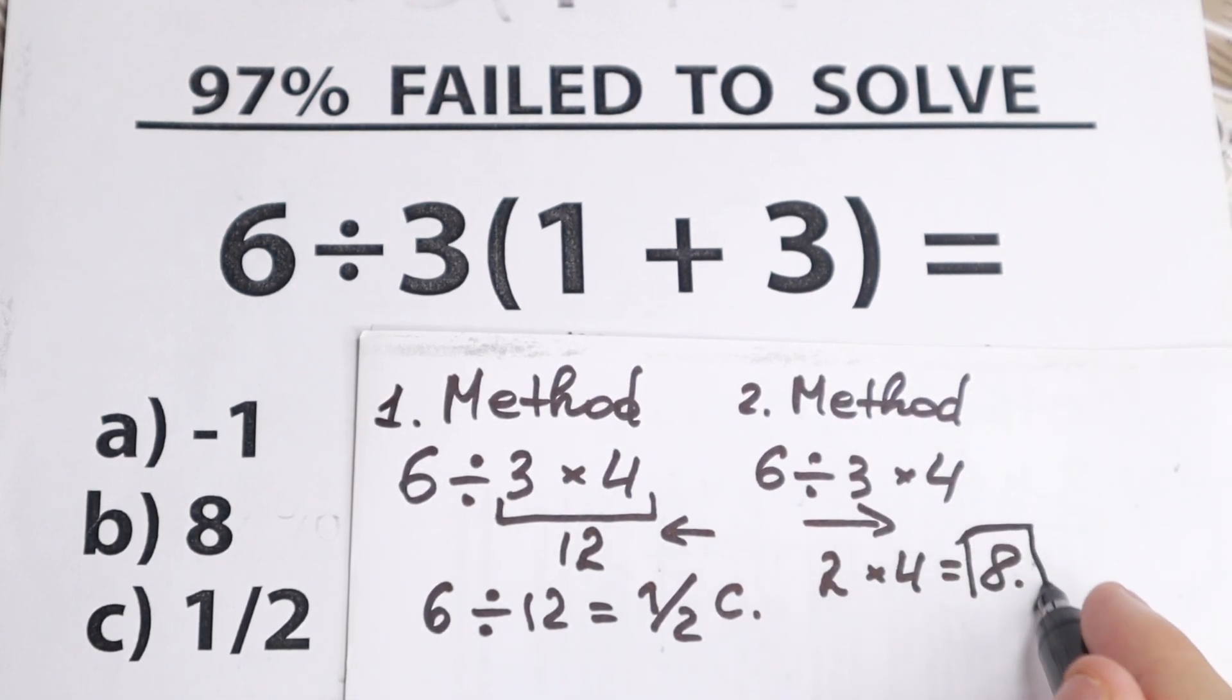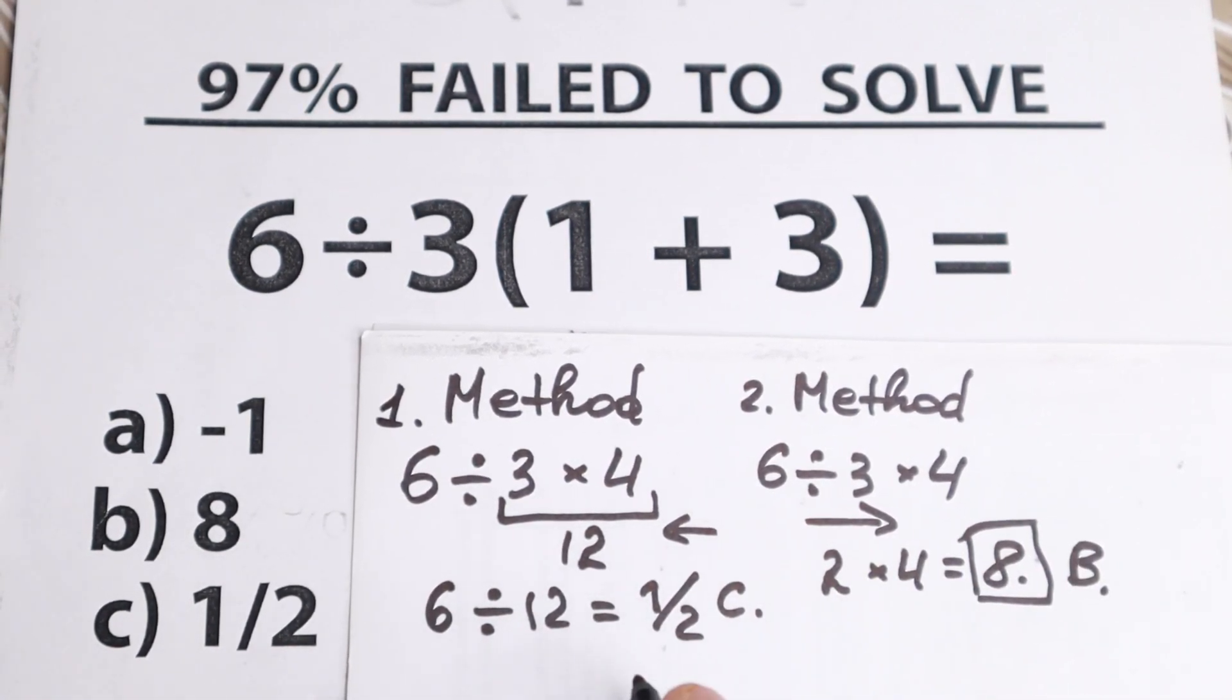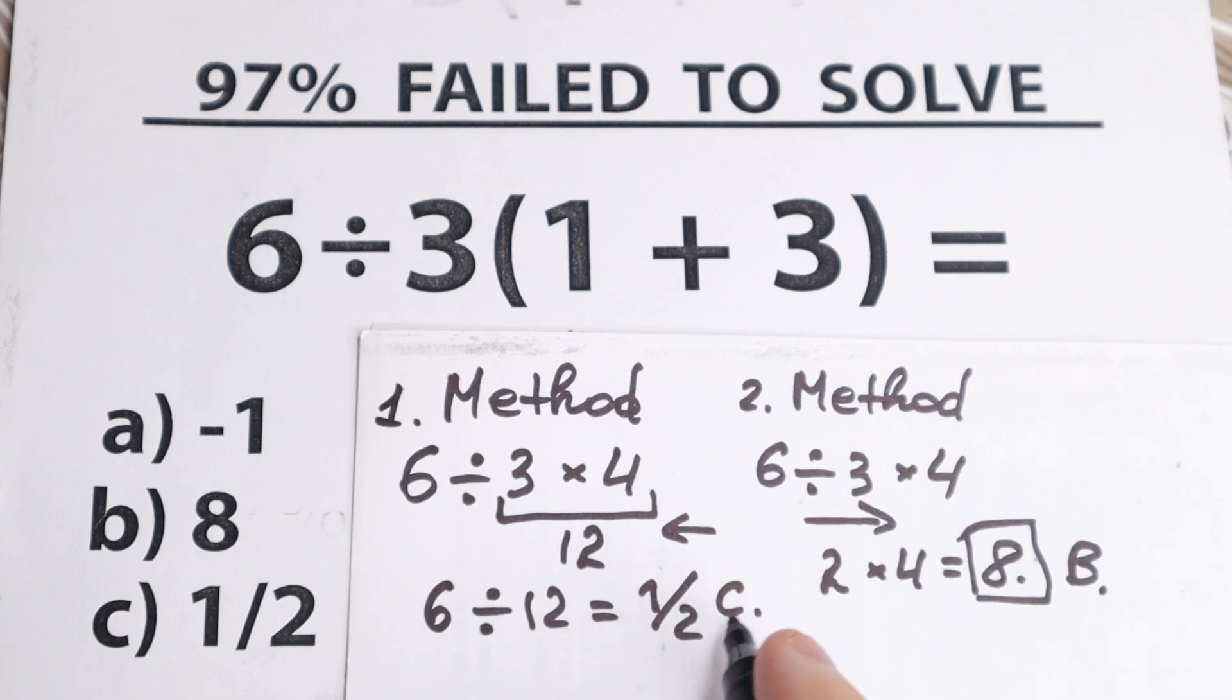And this is our answer. We still have this answer. This is option B. As you can see, we go with two different orders. This is the first order, option C. And this is the second order, option B. But which one is correct?